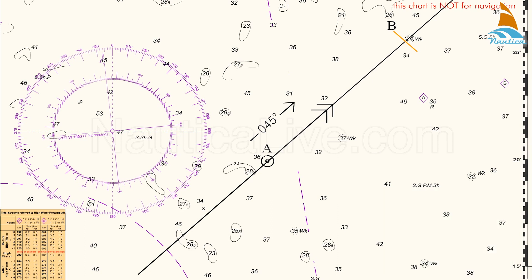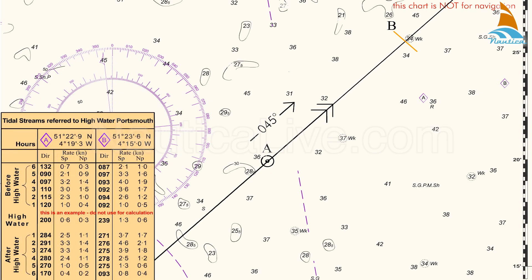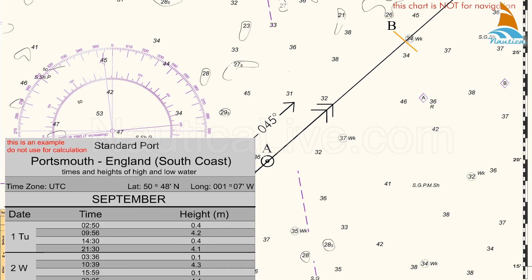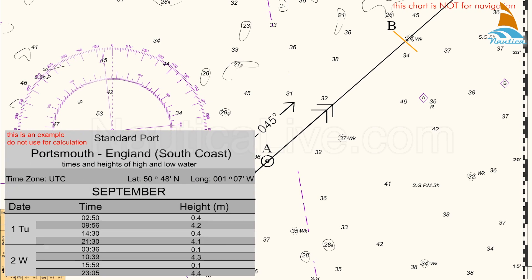Now we check the standard port to which the tidal streams refer. On the chart, we find out that it's Portsmouth. With this information we enter the tide table. We're interested in the morning high water. The morning high water on September 2nd is at 1039, and the height is 4.3 metres.